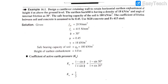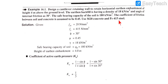Let's begin. We have a problem: we have to design a cantilever retaining wall to retain a horizontal earthen embankment of height 4 meters above ground level. The earthen backfill has a density of 18 kN/m³ and angle of internal friction of 30 degrees. The safe bearing capacity of soil is 180 kN/m², the coefficient of friction between soil and concrete is 0.45. Use M20 concrete and Fe415 steel.